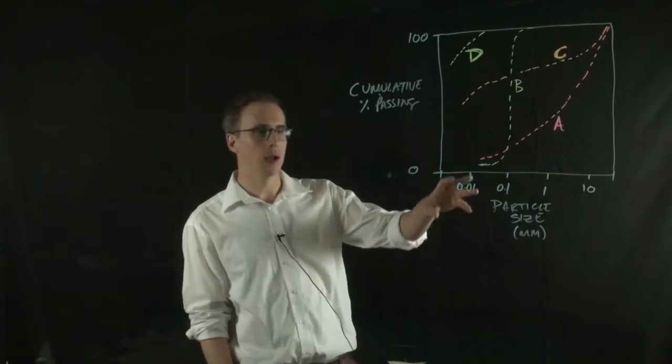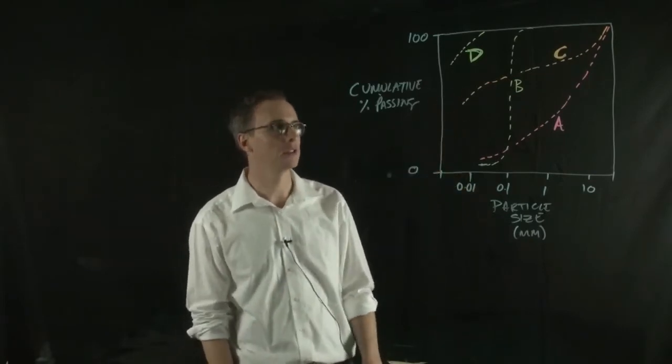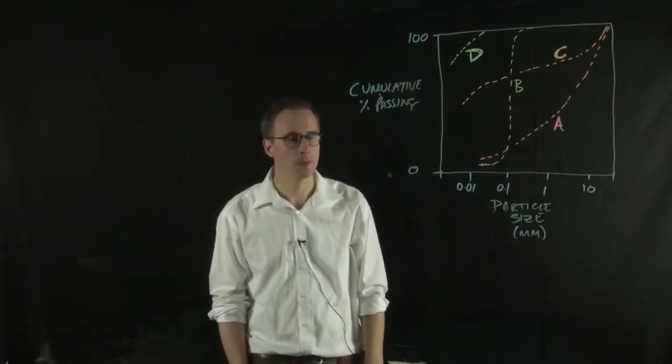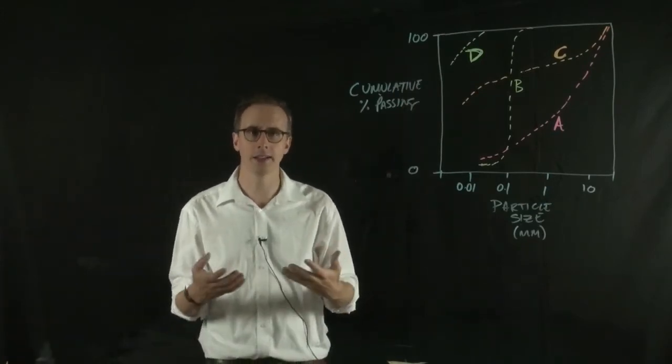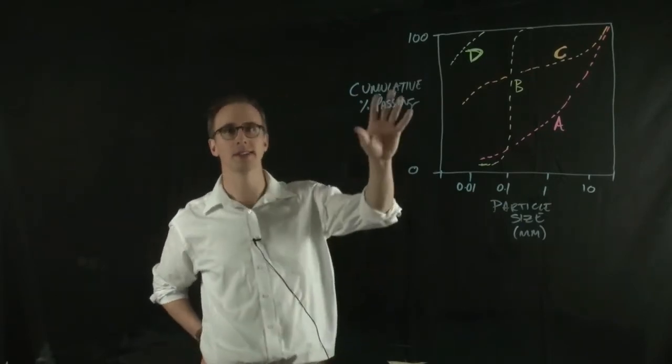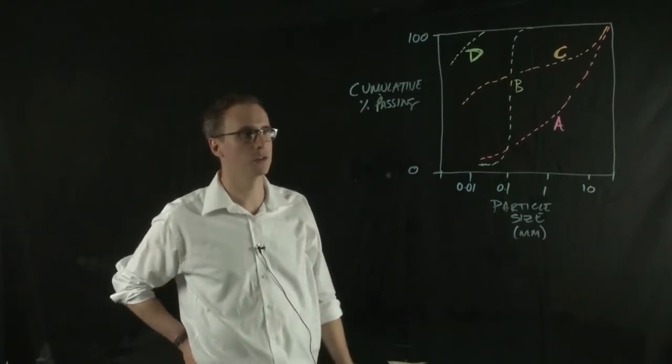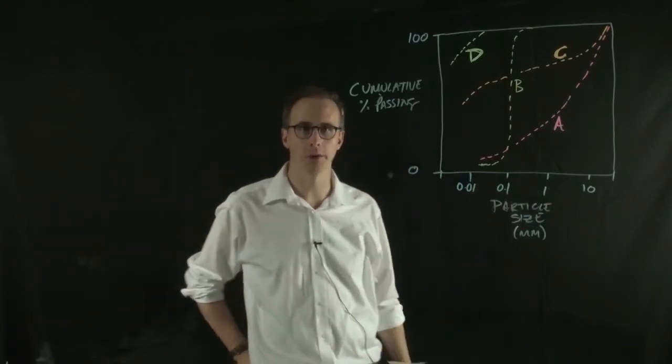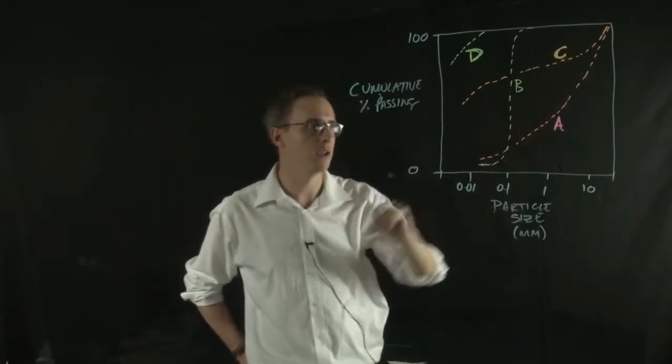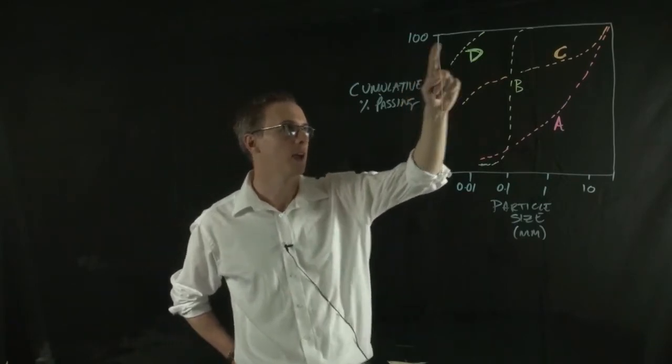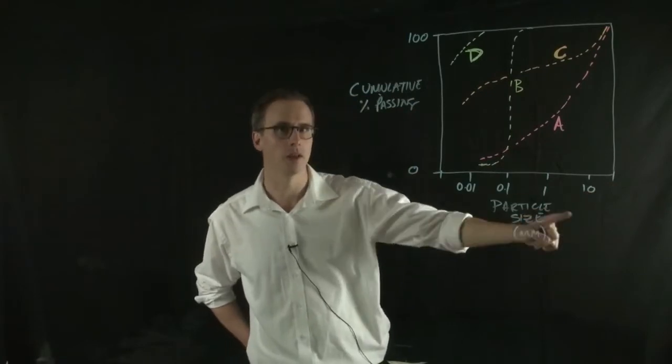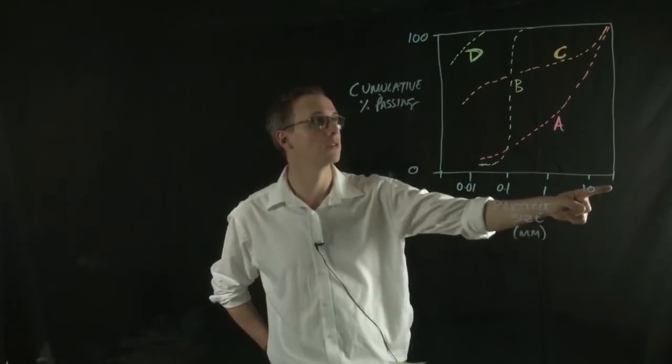A typical particle size distribution graph might look something like this, where on the y-axis you have cumulative percent passing, which is calculated by adding the mass that's retained on each sieve as you go down through the sieve stack and expressing it as a percentage of the total. On the x-axis we have particle size. Let's take line A for example. What this is saying is that at something like 20 millimeters, 100% of the material is passing that size.